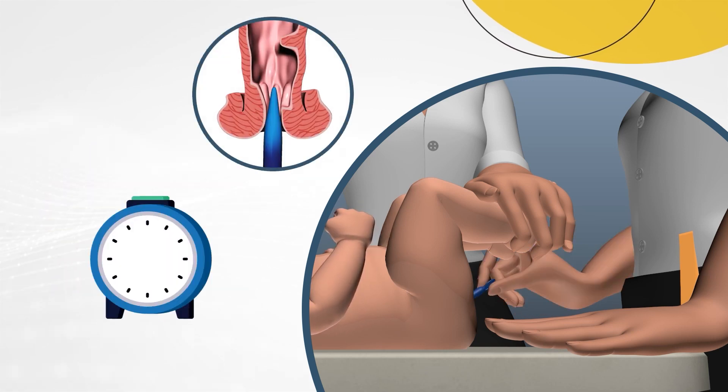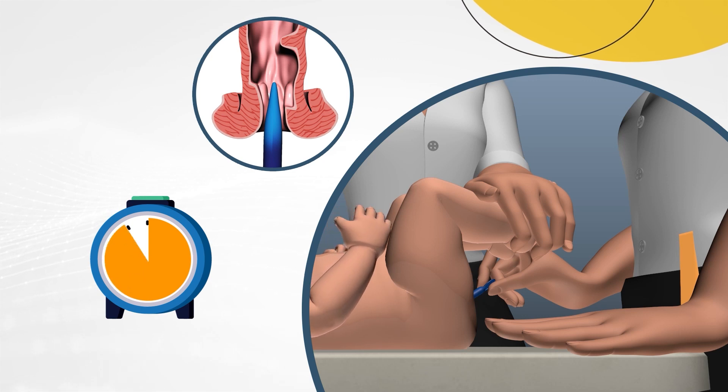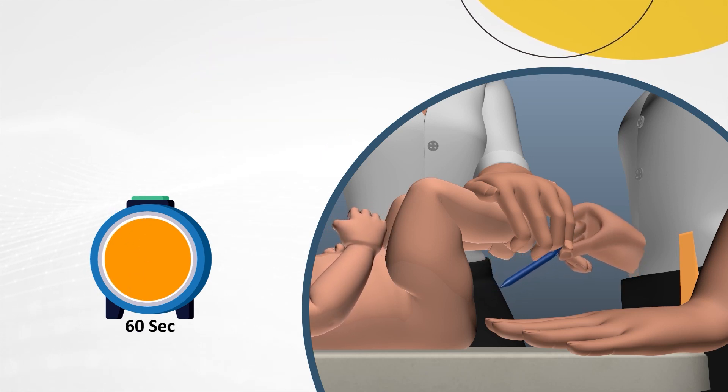Insert the dilator into your child's anus for approximately two inches. Hold the dilator in place for about one minute, and then gently pull back the dilator.